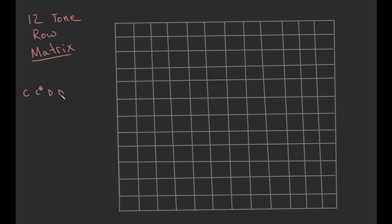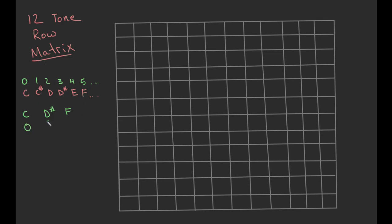Remember when we had C, C-sharp, D, D-sharp, E, and so on? We also called them numbers using set notation: zero, one, two, three, four, five, and so forth, all the way up to B. So if we use these numbers, we can make our tone row much easier. Instead of using C, D-sharp, and F, we can simply use zero, three, and five to represent our tone row.